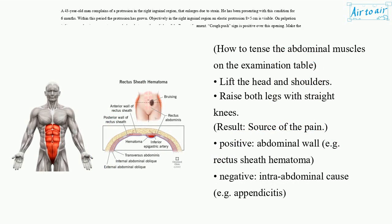How to tense the abdominal muscles on the examination table: lift the head and shoulders, or raise both legs with straight knees. Result interpretation — Positive: source of pain is the abdominal wall (e.g., rectus sheath hematoma). Negative: intra-abdominal cause (e.g., appendicitis).